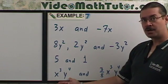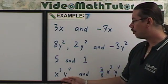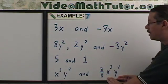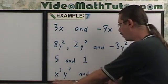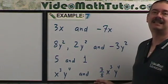Here, it looks a little more complicated. But we have x cubed, y to the fourth. This is also an x cubed, y to the fourth. The coefficients are different. We have 1 and 3 eighths. That's fine. So, these are also considered like terms.